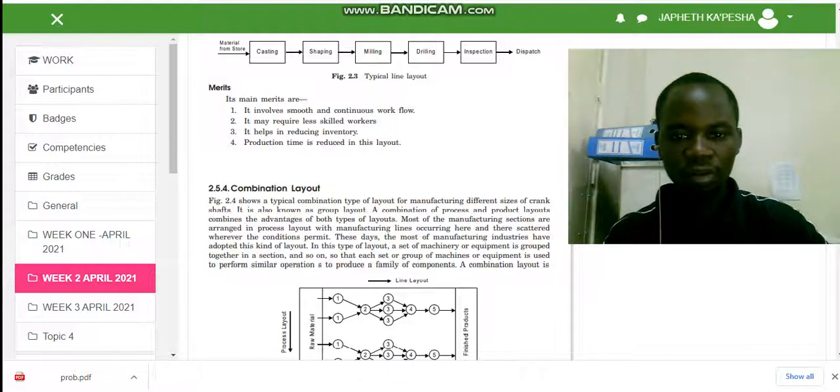Most of the manufacturing sections are arranged in process layout, with manufacturing lines occurring here and there, scattered wherever the conditions permit. These days, most manufacturing industries have adopted this kind of layout. In this type of layout, a set of machinery or equipment is grouped together in sections.